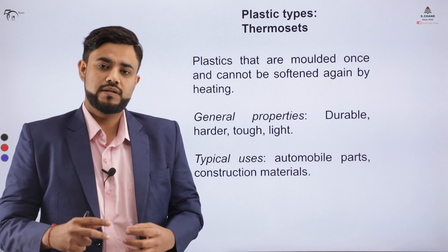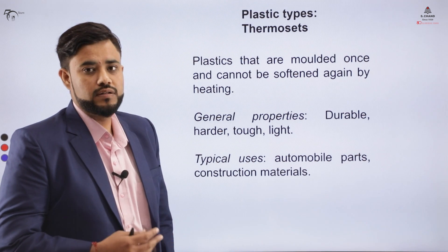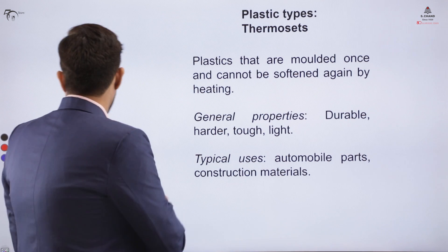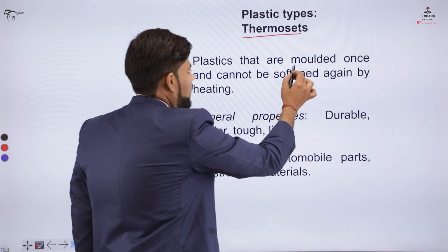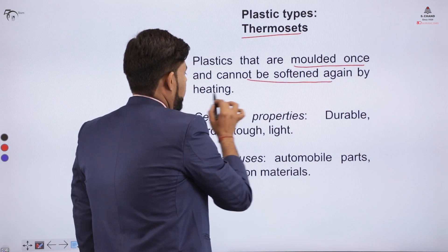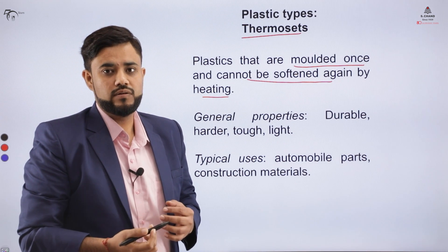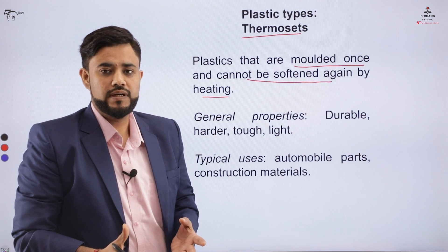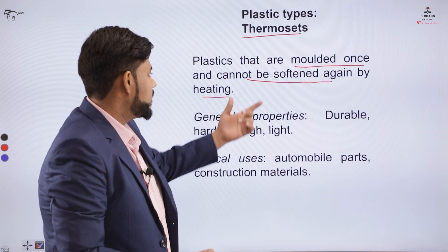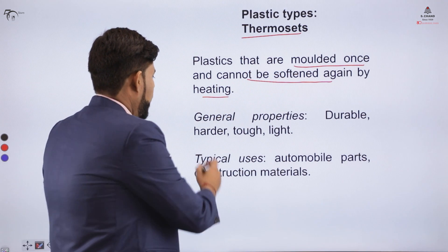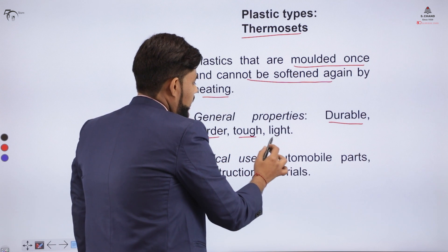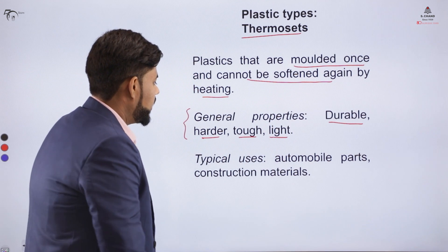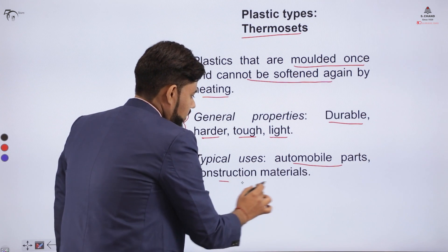let's first understand the different varieties of plastics. The first type is thermosets. Thermosets are a kind of plastic that are molded once and cannot be softened again by heating. They are generally durable, harder, tough, and light in weight. They are typically used for automobile parts or construction materials.